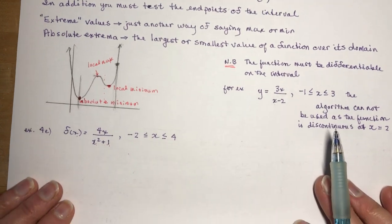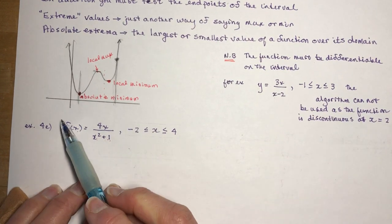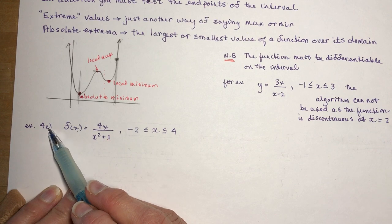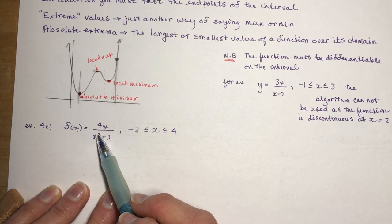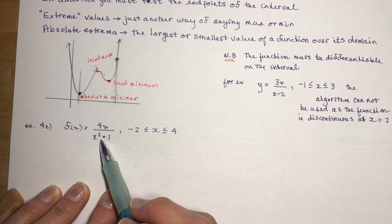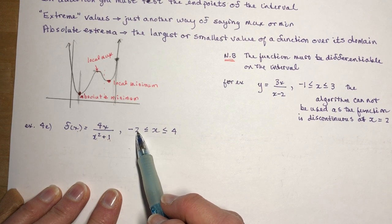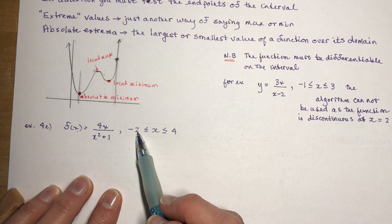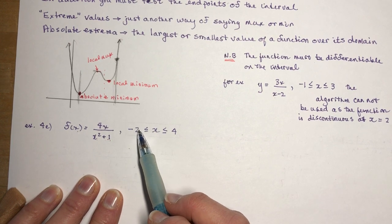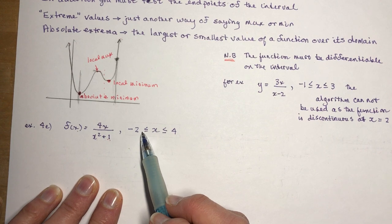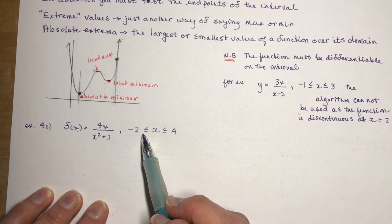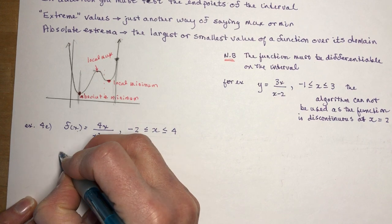So let's look at one that you can work with, and that would be this function here. It's number 4e from your homework textbook. So it gives you this function, f of x equals 4x over x squared plus 1 on this interval between minus 2 and 4. And your job is to use the algorithm for finding maximum or minimum values and determine the absolute extreme values of the function on the given interval.